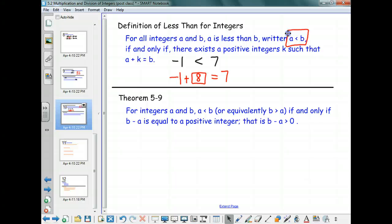All right, last theorem for this section, theorem 5.9. For integers A and B, A is less than B, or we could equivalently say B is greater than A, if and only if B minus A is equal to a positive integer. That is, B minus A is greater than zero.